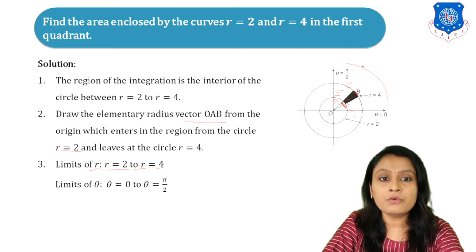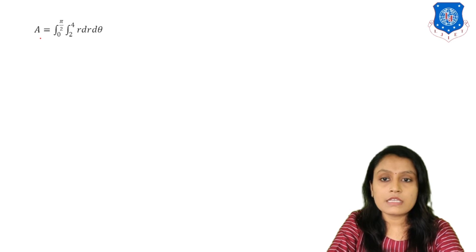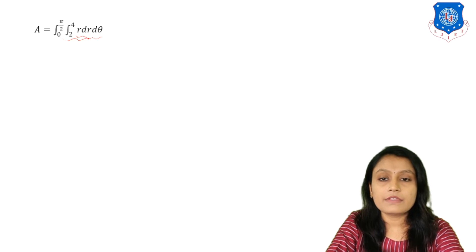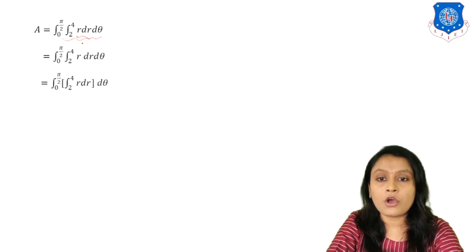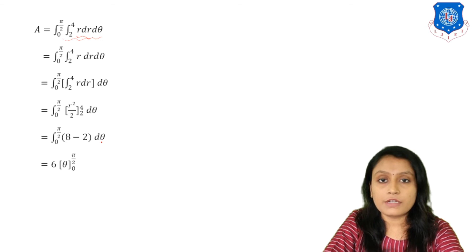Theta moves from 0 to pi/2 in the first quadrant, so the limits of theta are 0 to pi/2. The area equals the double integral from 0 to pi/2, and R from 2 to 4, of R dr d-theta. Integrating with respect to R: the integral of R is R squared over 2, evaluated from 2 to 4, giving 16/2 minus 4/2, which is 8 minus 2 equals 6.